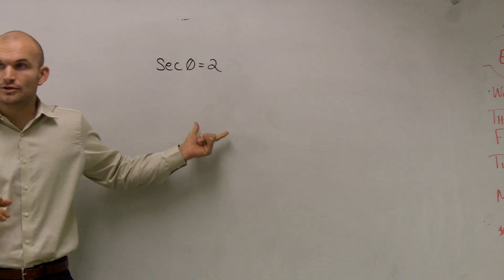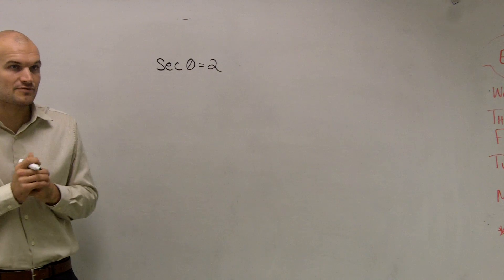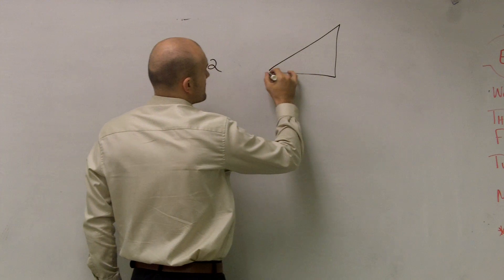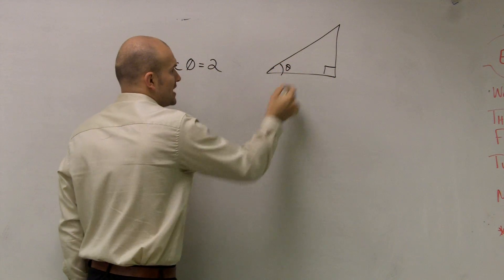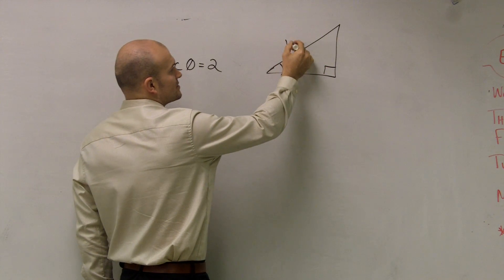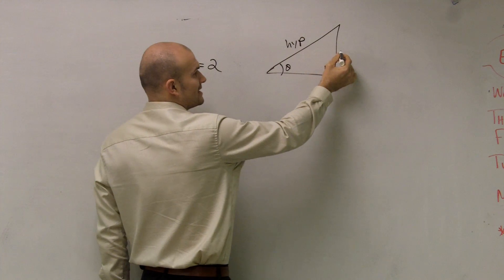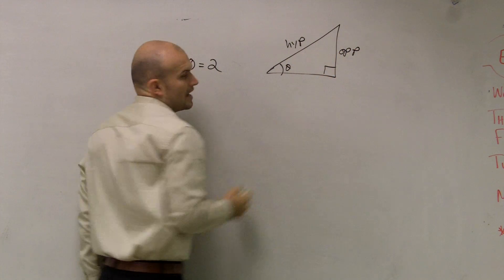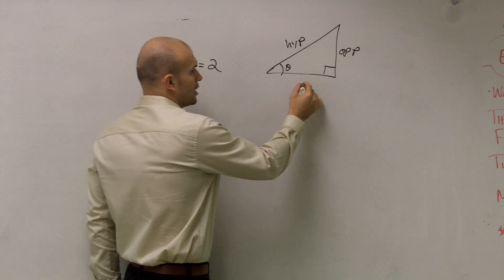They want us to sketch a right triangle to find and evaluate this trigonometric function. In a right triangle, we're going to have our angle theta. The side opposite the 90-degree angle is always going to be our hypotenuse. The side length that's opposite of your theta is always going to be your opposite, and the side length that connects theta with your right angle is what we call our adjacent.